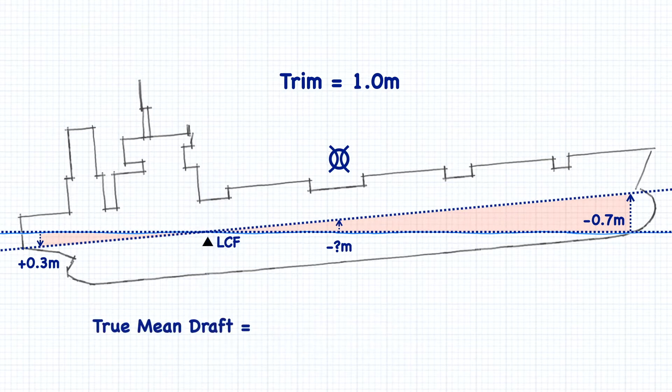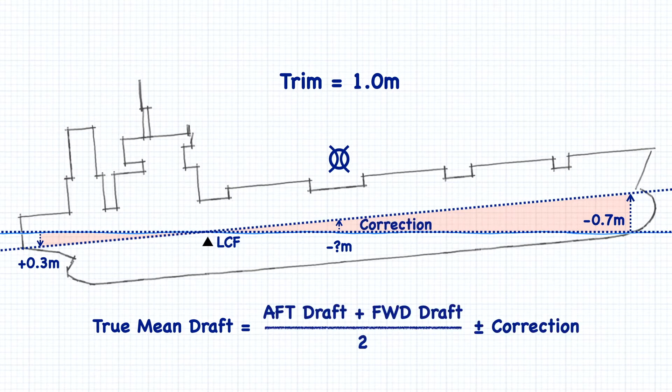Figuring out the true mean draft involves calculating a correction to apply to midships. Only then can we accurately gather information about our ship based on its drafts.